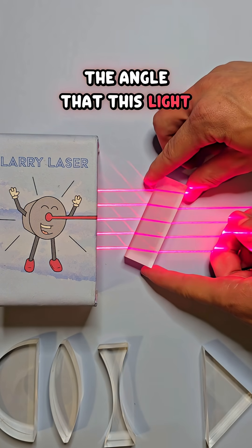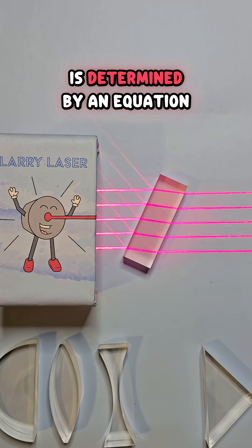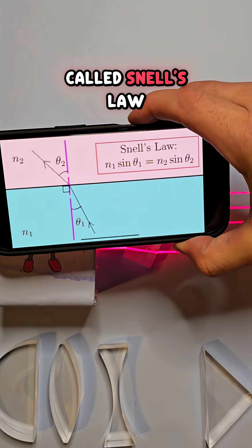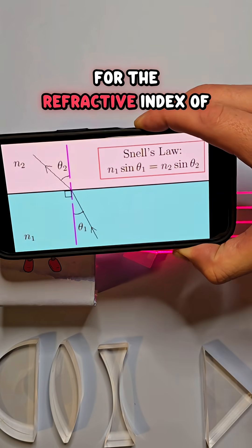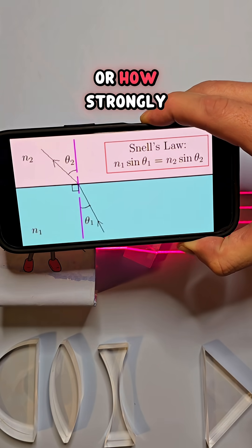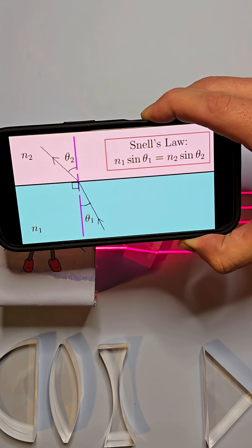The angle that this light is refracted is determined by an equation called Snell's Law, where the Ns here stand for the refractive index of each material, or how strongly light interacts with the molecules inside of it.